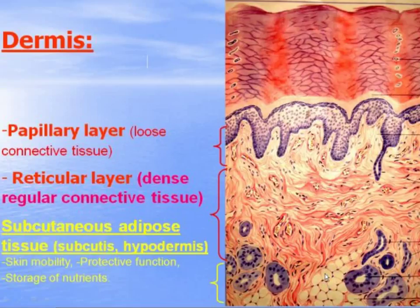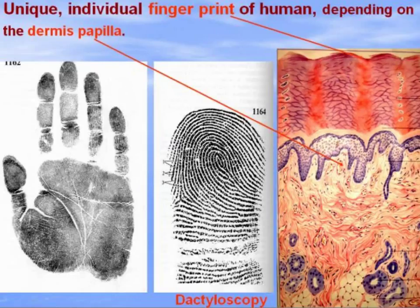The hypodermis provides protective function and storage of nutrients. There are unique individual fingerprints in humans, dependent on the dermis papillae — they push the epidermis upward, creating these unique ridge patterns. Dermatoglyphics is widely used in forensic medicine for identification of individuals.